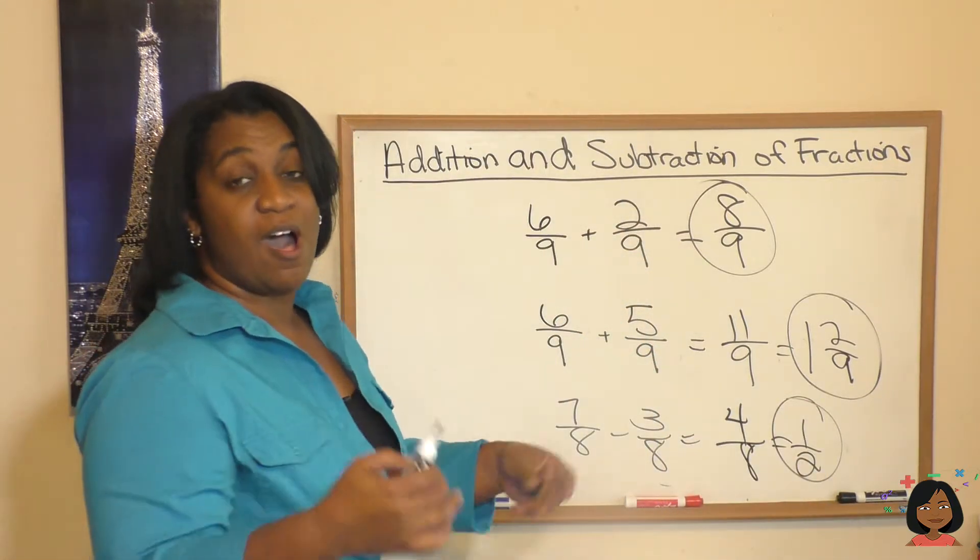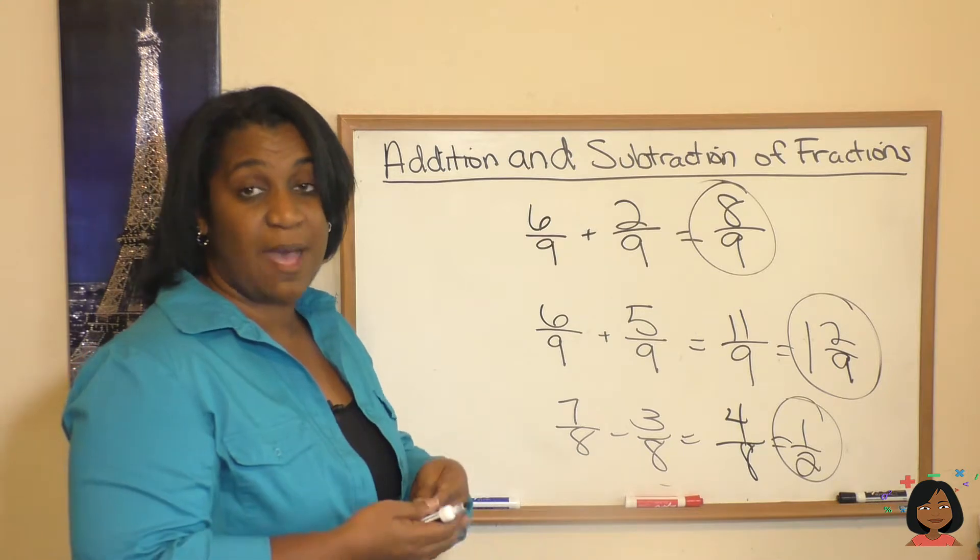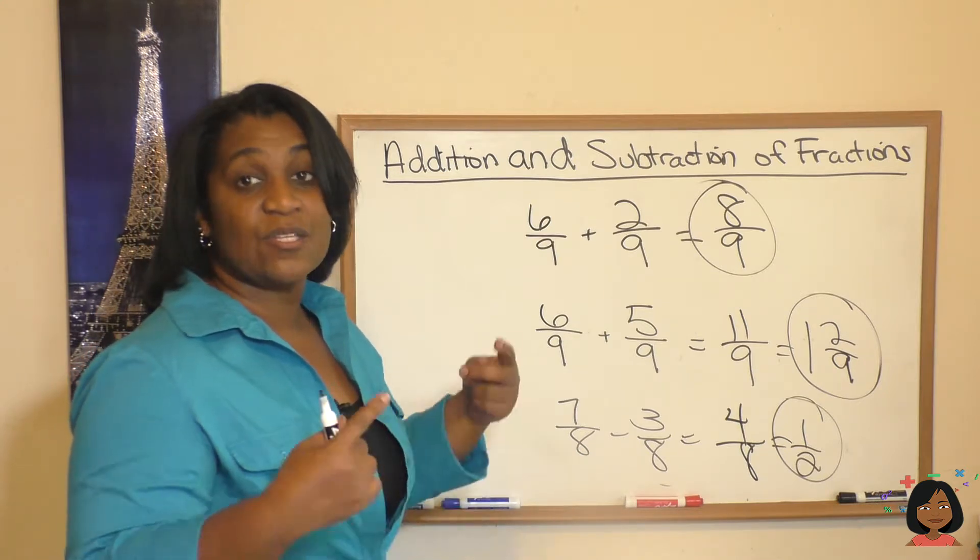We always simplify fractions down to the lowest form, which here would be 1 half. That's a quick review of fractions with the same denominator. Now let's look at different denominators.